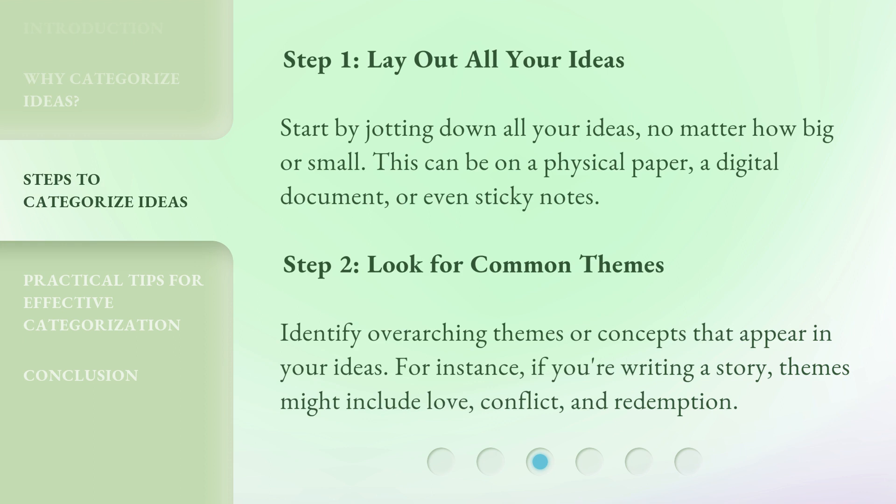Step 1: Lay out all your ideas. Start by jotting down all your ideas, no matter how big or small. This can be on a physical paper, a digital document, or even sticky notes. Step 2: Look for common themes. Identify overarching themes or concepts that appear in your ideas. For instance, if you're writing a story, themes might include love, conflict, and redemption.